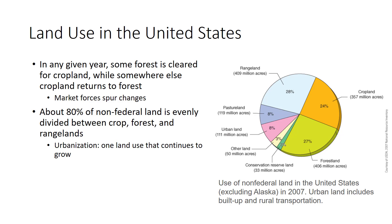The figure shows how non-federal land was used in 2007, but land use does not remain static. In any given year, some forest is cleared for cropland while somewhere else cropland returns to forest. Market forces such as land or grain prices, technological change such as irrigation, and government programs spur changes in land use. About 80% of non-federal land is evenly divided among crop, forest, and rangelands as the major uses of our soils. One land use continues to grow at the expense of others: the building of cities, towns, factories, and roads.